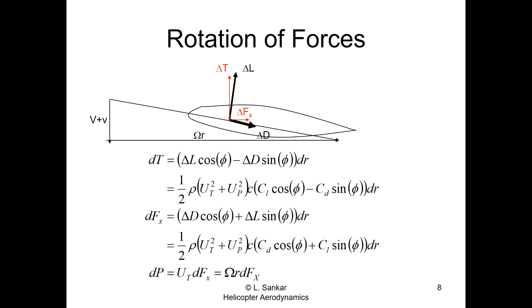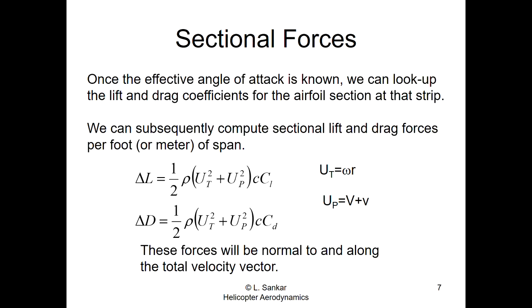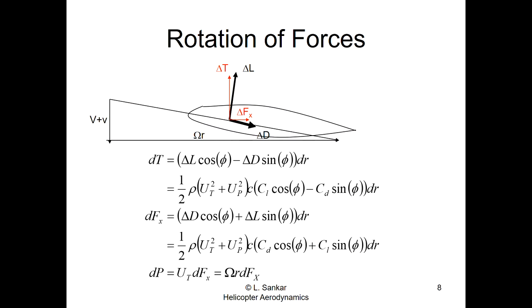Multiplying by dr gives the actual thrust in pounds produced by a strip of width dr in the radial direction. For the horizontal component, delta L times sine phi plus delta D times cosine phi gives dFx. Multiplying dFx by Ut gives the power consumed by that particular strip.